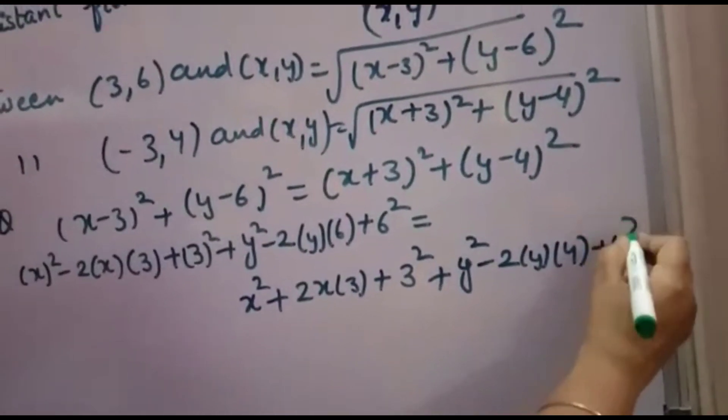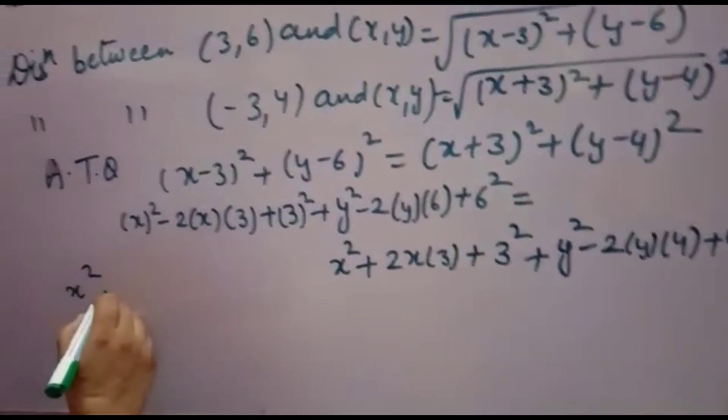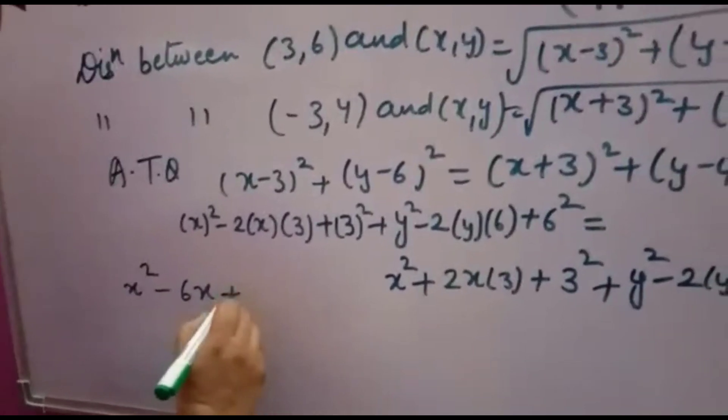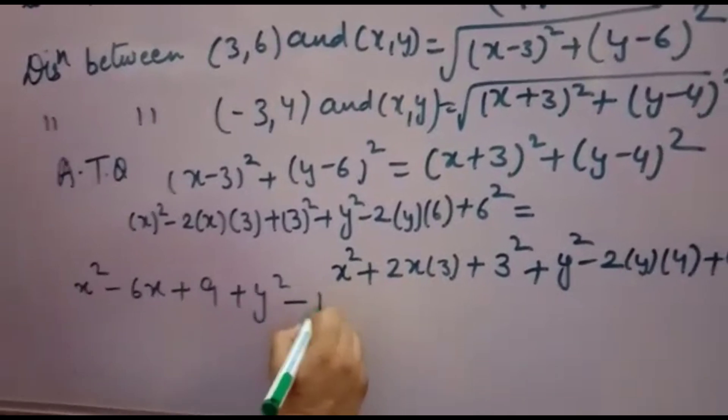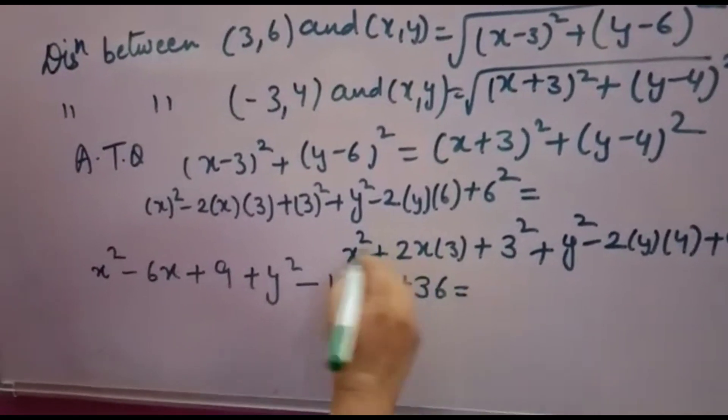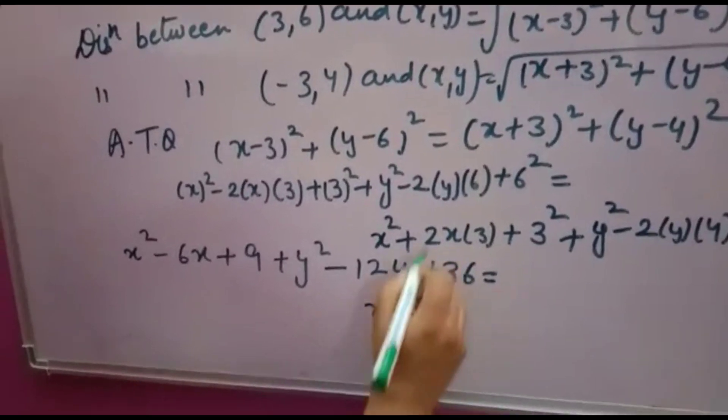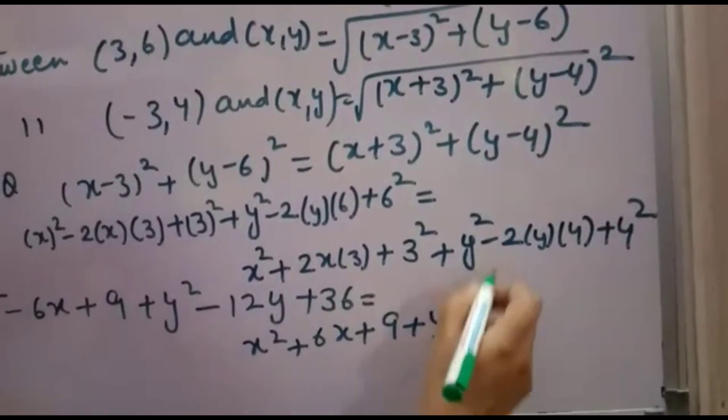Now you will solve it: X², 2 times 3 is 6, so minus 6X plus 3² is 9, plus Y² minus 2 times Y times 6 is minus 12Y, plus 6² is 36, equals X²...